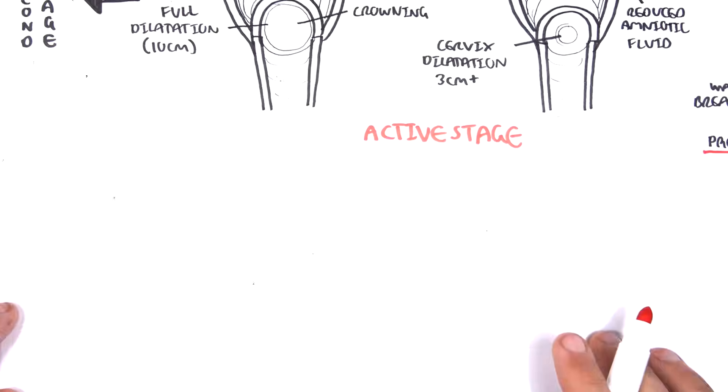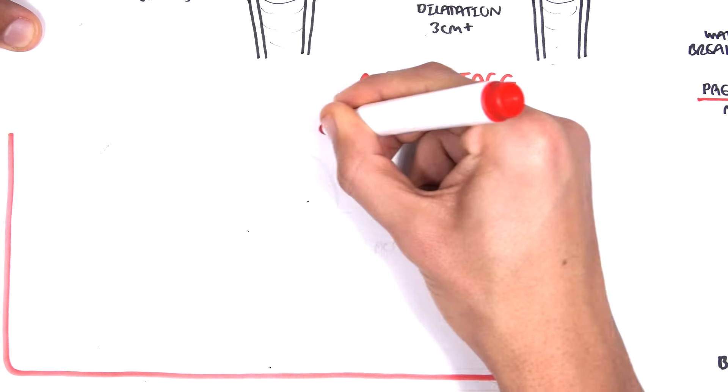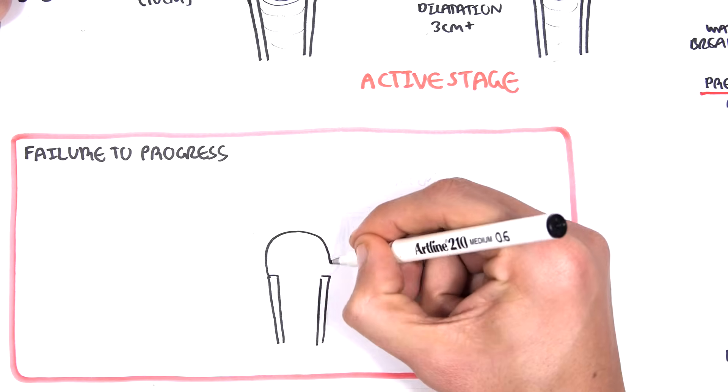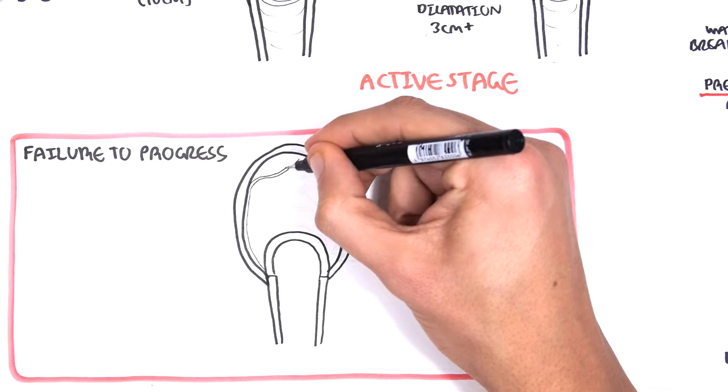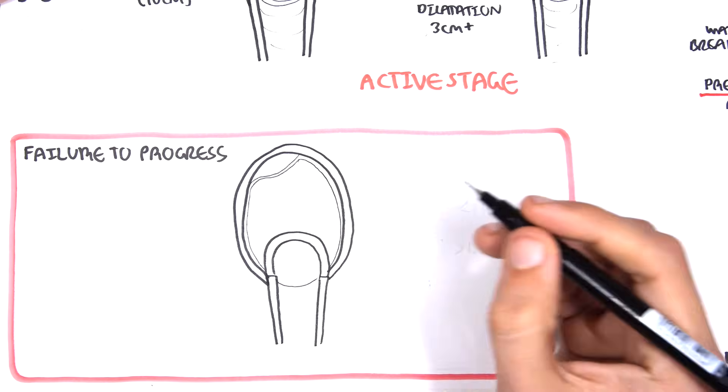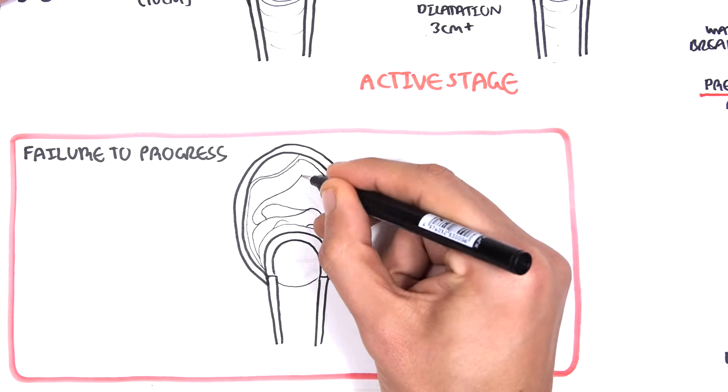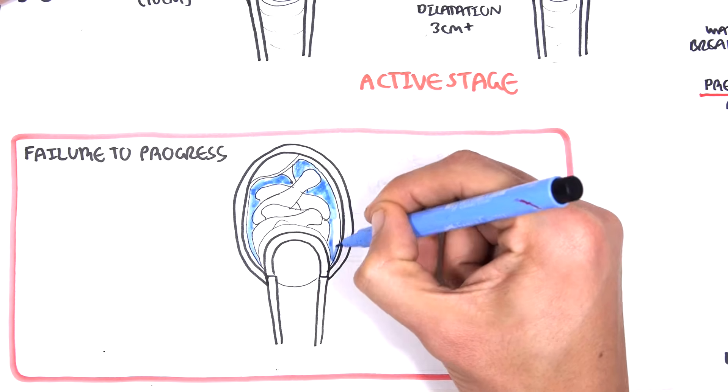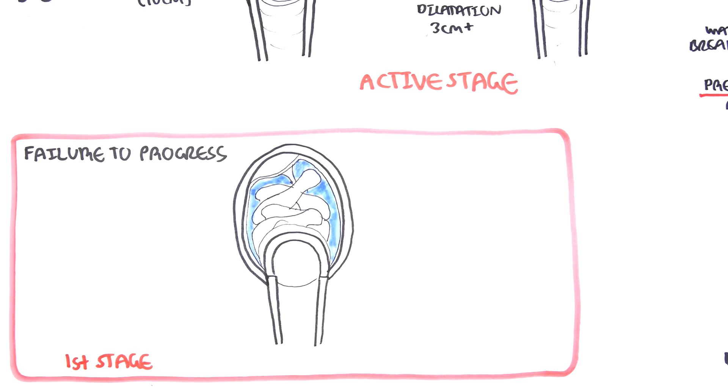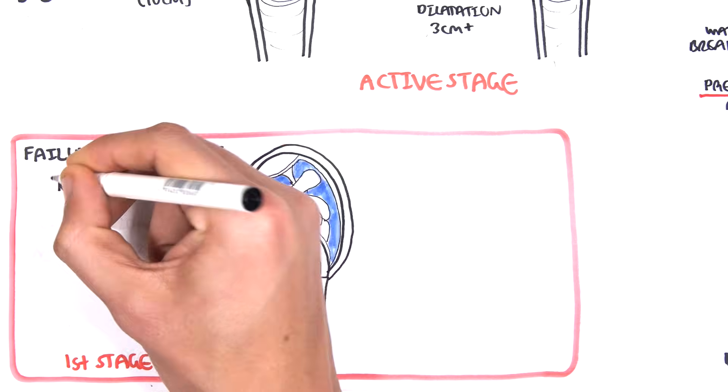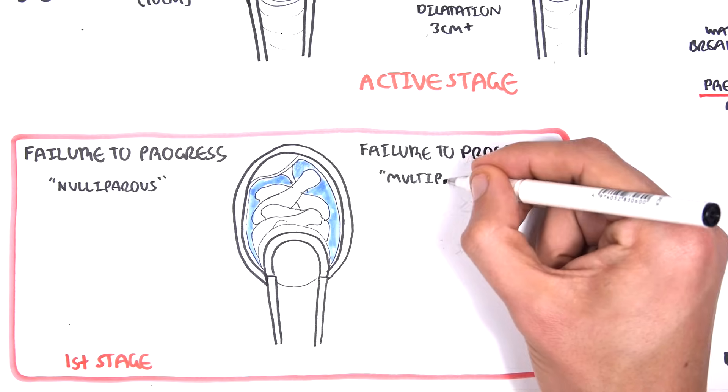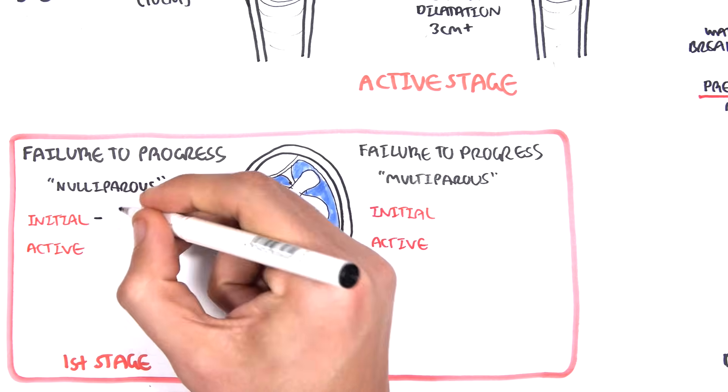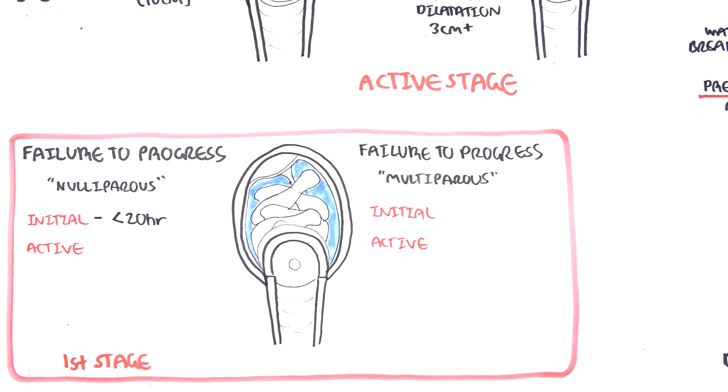An important point to make. Now the first stage of labor can be very long, especially for nulliparous women. So a woman who has their first pregnancy or first delivery. Often the first stage can be so difficult that there is no progress at all. And thus we call this failure to progress. There is failure to progress in every stage of labor, stage 1, stage 2, stage 3. Failure to progress in stage 1 of labor is different between nulliparous and multiparous women. Stage 1 is divided into the initial and active phase. Normally, the initial phase in a nulliparous woman should take less than 20 hours. And if it is longer, it may indicate failure to progress.